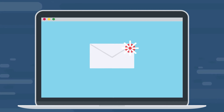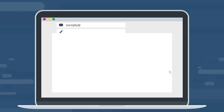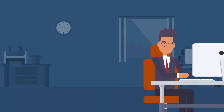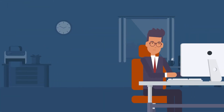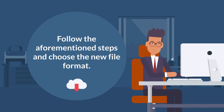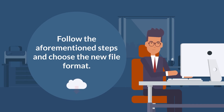Then you'll receive an automated email with the price list in the format you requested. If you want to change the format from the initial request for a price list, you need to follow the aforementioned steps and choose the new file format.